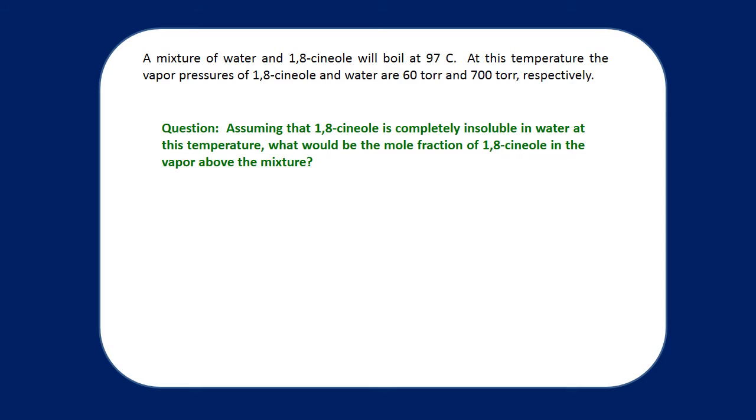So let's do a little bit of math here and see if we can prove to ourselves that we can isolate eucalyptol using a steam distillation. In other words, we can deliberately distill away a mixture of water and cineole, or eucalyptol, from the insoluble plant material that we want to isolate it from. Now the vapor pressure of 1,8-cineole is about 60 torr near the boiling point of this mixture, and water is about 700 torr.